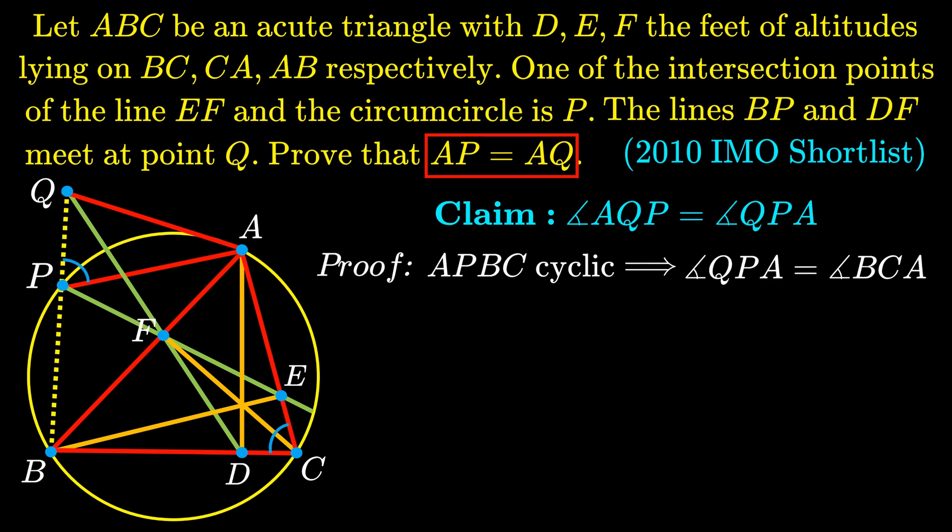Next, it is pretty well known that by the properties of the orthocenter H, quadrilateral AFDC is a cyclic quadrilateral, because the angles, angle AFC is equal to the angle ADC, which are 90 degrees.